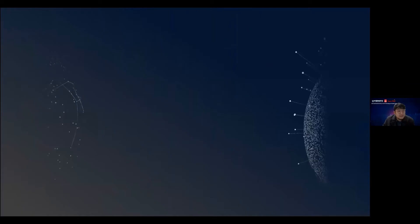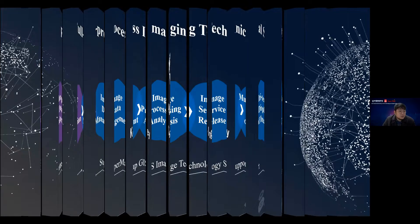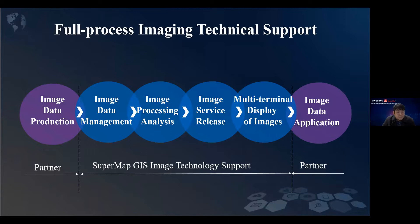The second part is key technology. This covers the life cycle of remote sensing or image data. After data acquisition, the first step is data production — such as removing noise, removing clouds, correcting distortion, and setting equal color. These tasks are completed by professional image data production companies or data collectors. The business scope of SuperMap GIS platform includes image data management, warehousing, analysis, publication service, and multi-terminal display.